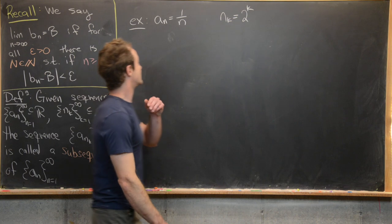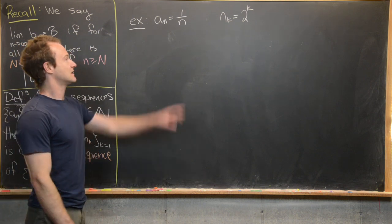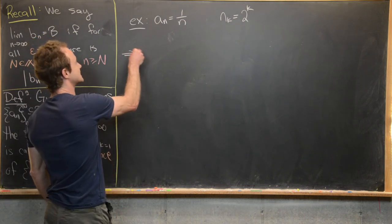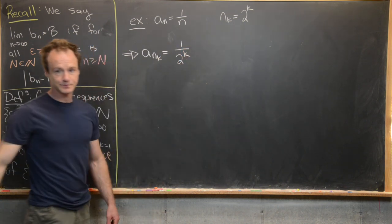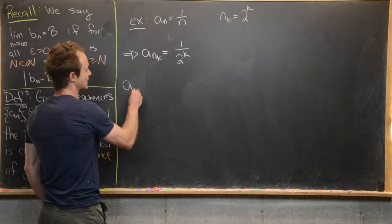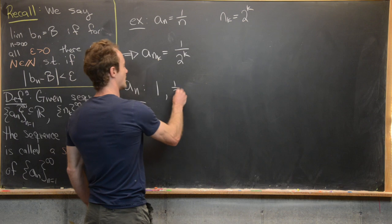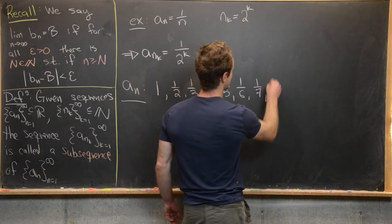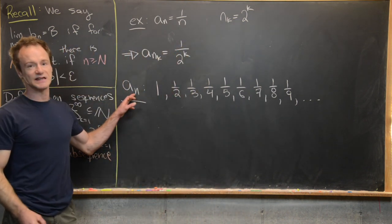Let's look at an example. Let's say our sequence a_n is the harmonic sequence, so it's 1/n. And then let's say that our sequence n_k is 2^k. So we can easily put this together and see that a_{n_k} is equal to 1 over 2^k. We can also visualize this by making a list: a_n gives us 1, 1/2, 1/3, 1/4, 1/5, 1/6, 1/7, 1/8, 1/9, and so on.